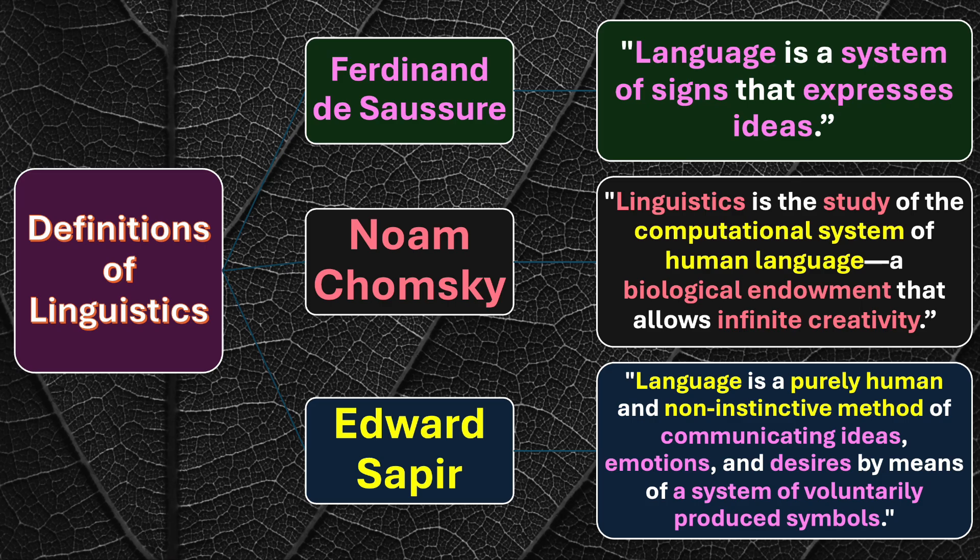So what we understand from Sapir's definition is that language is purely human, it is non-instinctive, and with the help of it we communicate ideas and express our opinions. It also has a system of voluntarily produced symbols.